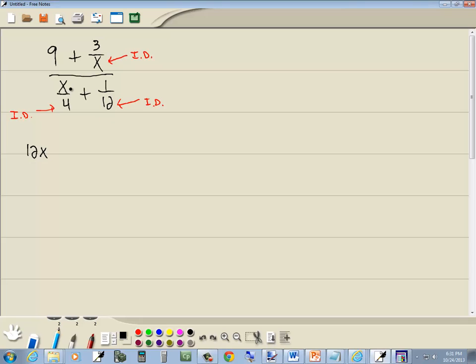And that's where we're going to multiply it times everything. So I'll multiply it times the 9. I'll multiply it times the 3 over x. I'll multiply it times the x over 4. And I'll multiply it times the 1 over 12.